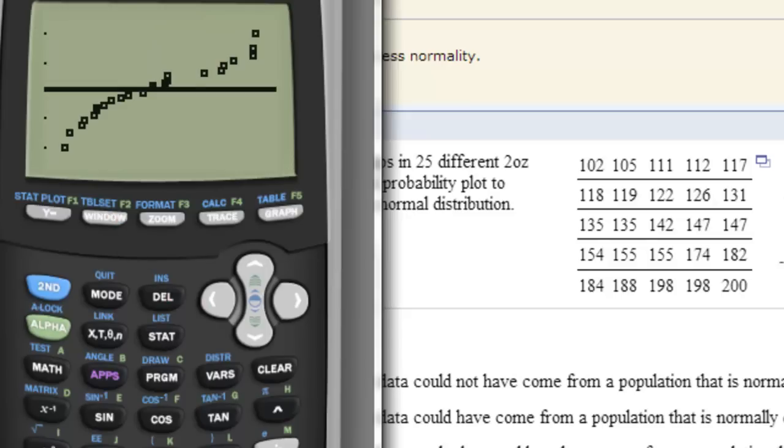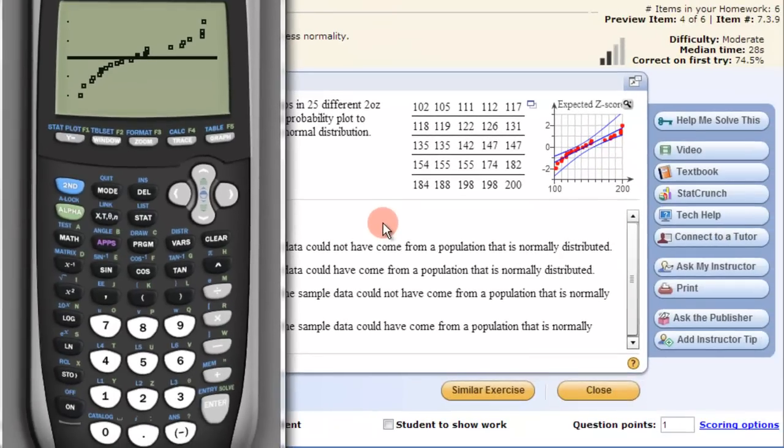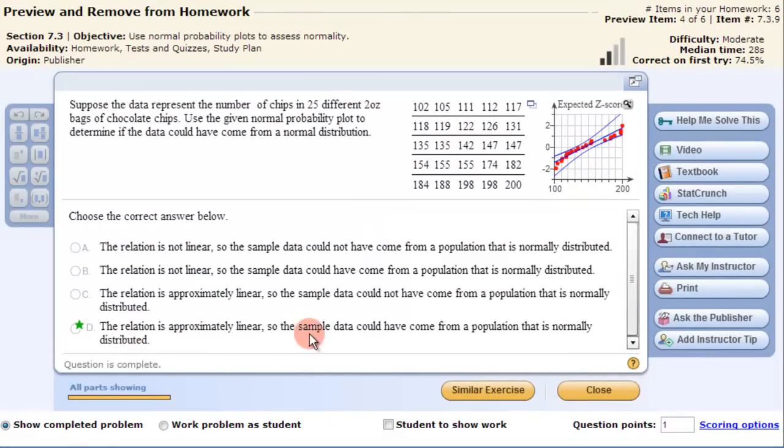And then you can see our expected Z scores plotted at a probability that is approximately linear. So therefore our problem, the answer is the relation is approximately linear. So the data sample could have come from a population that is normally distributed.